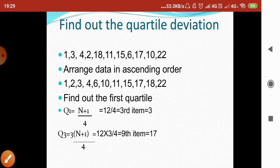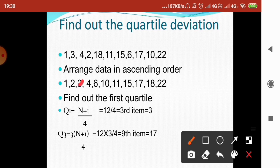Now we calculate the first quartile. Q1 is calculated using the formula (n+1) divided by 4. Here n is 11, so n+1 is 12, and 12 divided by 4 is 3. So the third item is Q1, which is 3 itself.